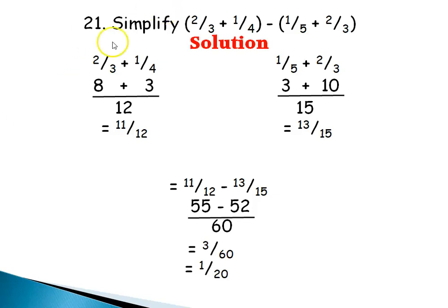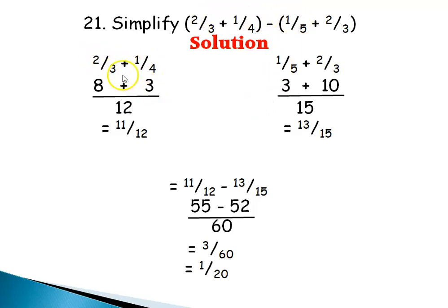Question 21: Simplify (2/3 + 1/4) minus (1/5 + 2/3). We'll solve the content of the brackets separately and then subtract them. For 2/3 + 1/4, the LCM of 3 and 4 is 12. 3 into 12 is 4; 4 times 2 is 8. 4 into 12 is 3; 3 times 1 is 3. 8 plus 3 is 11, giving 11/12.